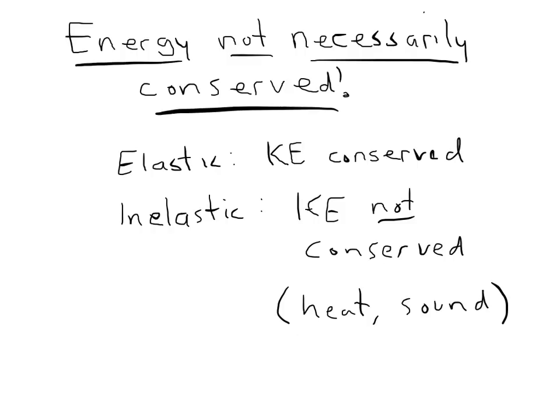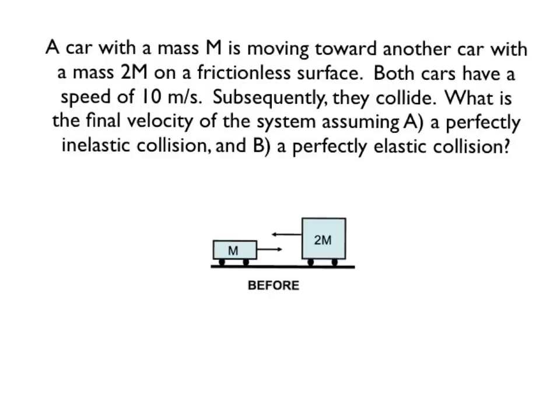Now we're going to try this out with a specific problem. We have a car with a mass of m moving to the right toward another car with a mass of 2m on a frictionless surface. Both are initially moving at 10 meters per second: the car on the left (mass m) is moving to the right, and the car on the right (mass 2m) is moving to the left. They collide. What is the final velocity of the system, assuming (A) a perfectly inelastic collision and (B) a perfectly elastic collision? We'll do inelastic first, then elastic.